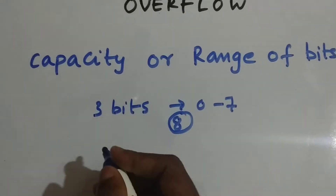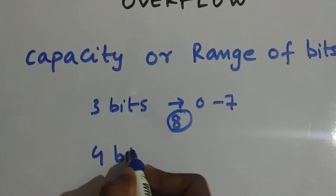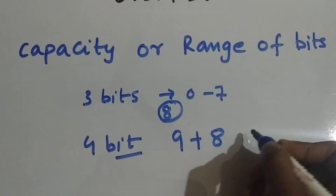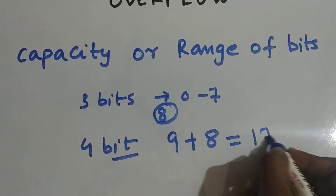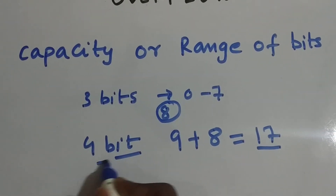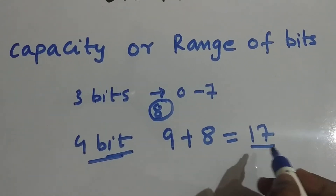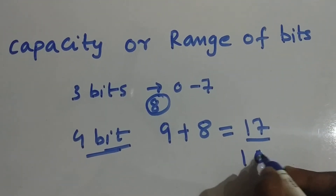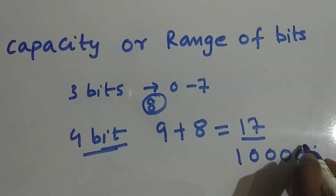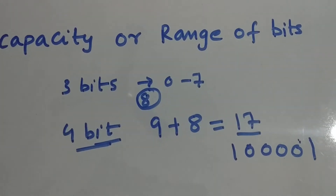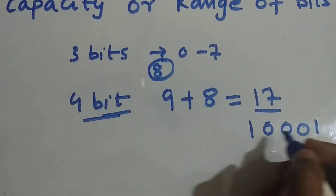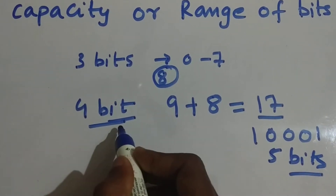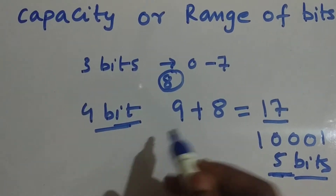Now let's look at four bits. I'll do an addition: nine plus eight. Nine plus eight equals seventeen. Seventeen cannot be represented in four bits — it requires five bits. Our range is four bits, so since we have an extra bit, this is an overflow condition.